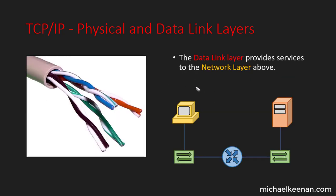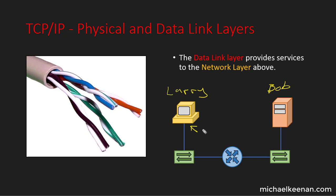As an example, we have a computer called Larry and a server called Bob. Larry has information from the web browser in the application layer. He sends it down to the transport layer, which encapsulates it into a segment, then down to the network layer where it gets encapsulated into a packet with source and destination IP addresses. The NIC card then processes the IP packet, encodes it into a frame, and then encodes it into physical transmissions — ones and zeros — and sends it to the switch.